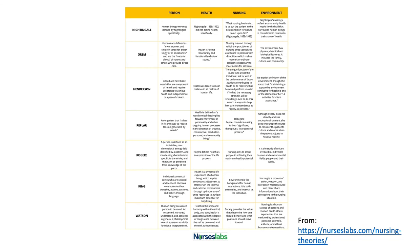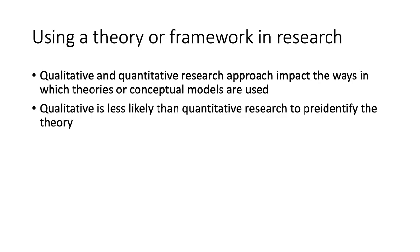We know from different models that different models describe person, health, nursing, and environment in different ways. All of these are nurse theorists. Take Dorothea Orem, for example. She defines humans as men, women, and children cared for either singly or as social units, and are the material object of nurses and others who provide direct care. This is an example of one of the theories that some people now question because of the language of what nurses do for the person, rather than the person being defined independently of a nurse. You can look through these examples and note that each one has a slight difference in the way they define each of these elements.